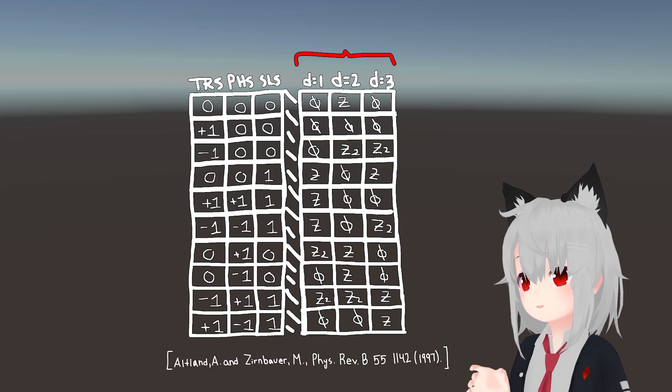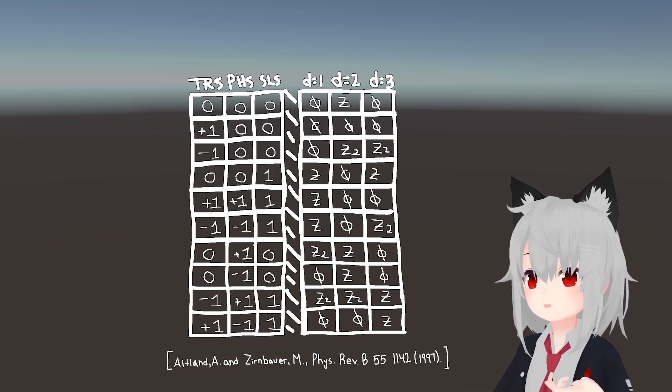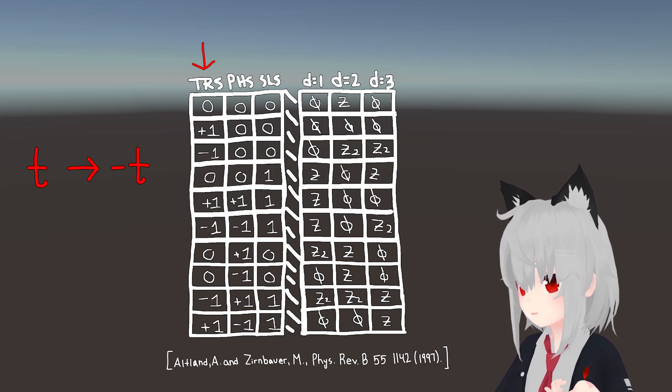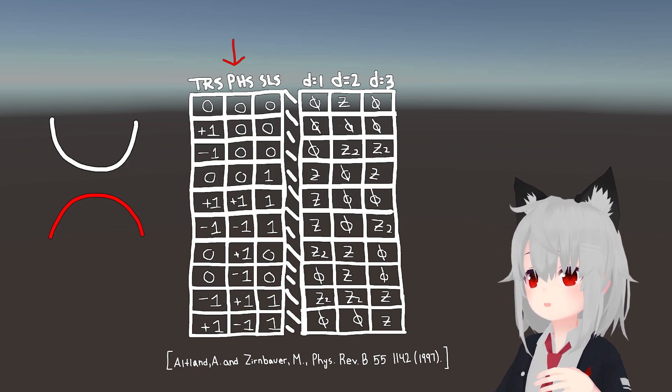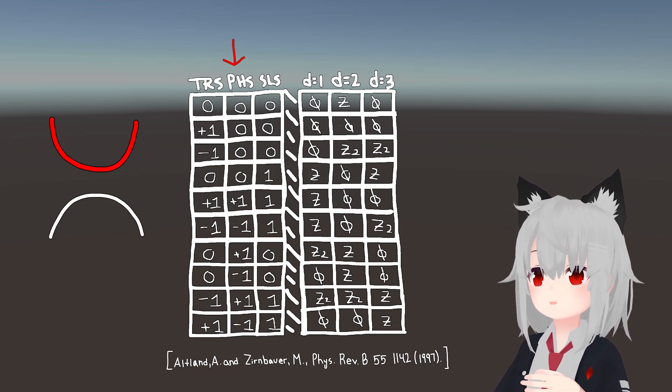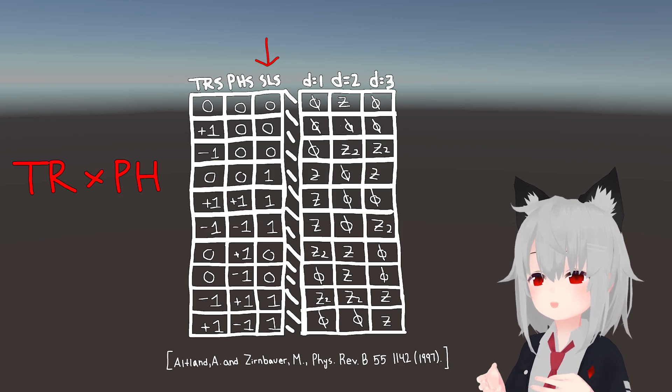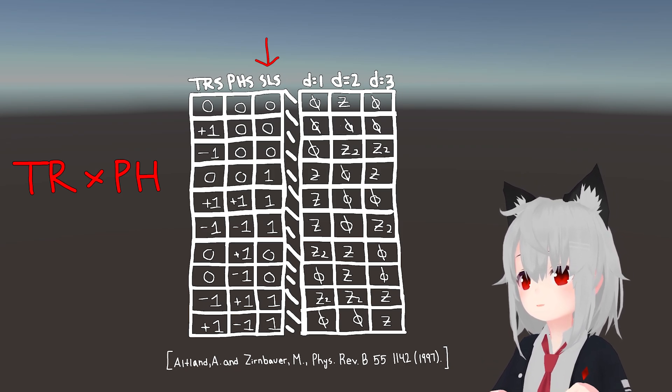In particular, its dimensionality, along with the presence or absence of time-reversal symmetry, which takes time to minus itself, particle-hole symmetry, which exchanges filled and empty states, and sub-lattice symmetry, which is defined as the composition of the prior two operations.